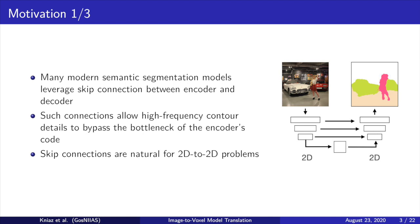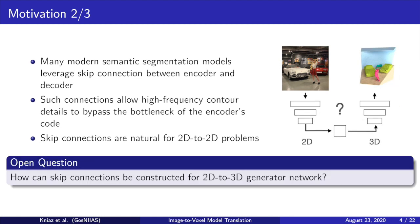Many modern semantic segmentation models leverage skip connections between encoder and decoder. Such connections allow high-frequency contour details to bypass the bottleneck of the encoder's code. Skip connections are natural for 2D-to-2D problems and significantly improve the quality of 2D semantic segmentation. Still, there is an open question for 3D data: how can skip connections be constructed for a 2D-to-3D generator network?